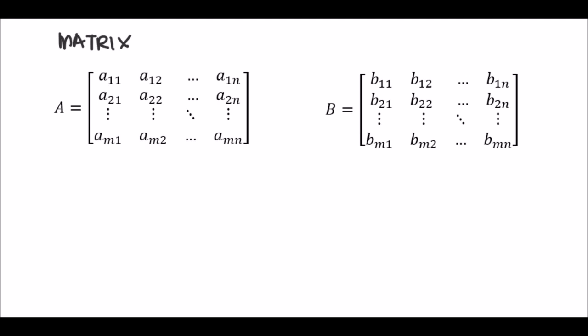And the elements of those two matrices are as follows: you know, A11, A12, and then on the other matrix B11, B12, in general. So what do you do if you need to add them up together?